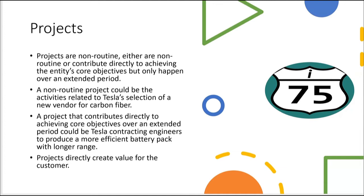Projects are either non-routine or they contribute directly to achieving the entity's core objectives but only happen over an extended period. A non-routine project could be the activities related to Tesla's selection of a new vendor for carbon fiber. A project that contributes directly to core objectives over an extended period could be Tesla contracting engineers to produce a more efficient battery pack with longer range — such as a research and development or engineering project.